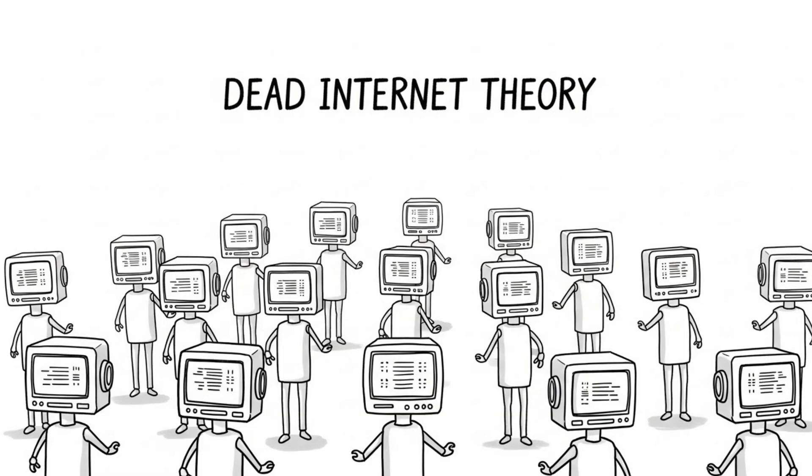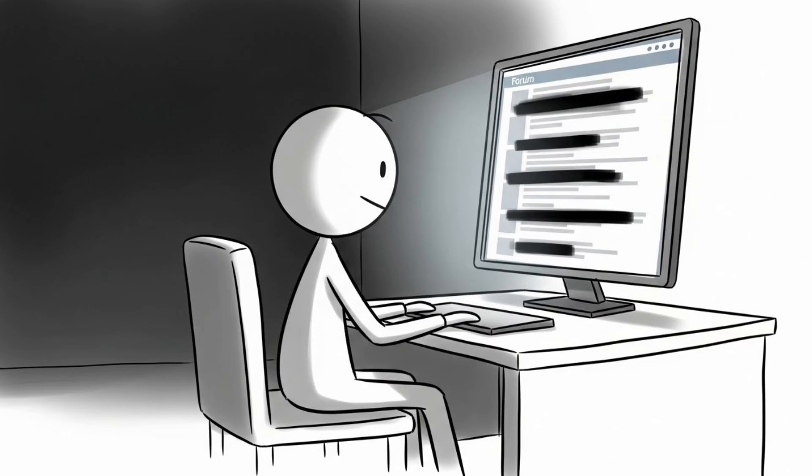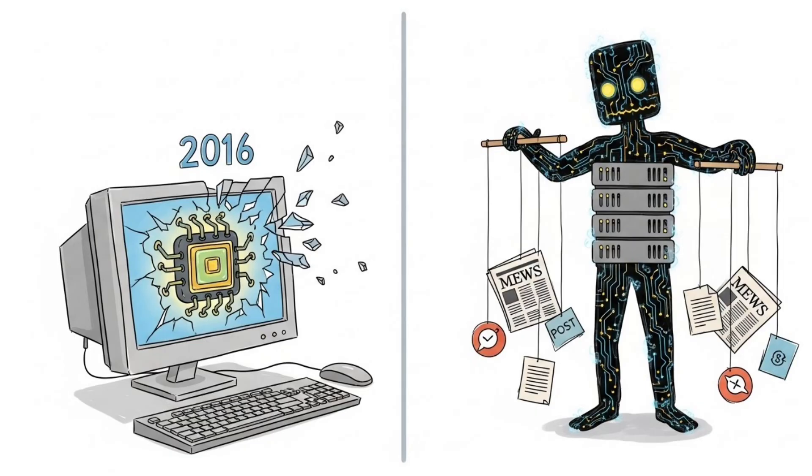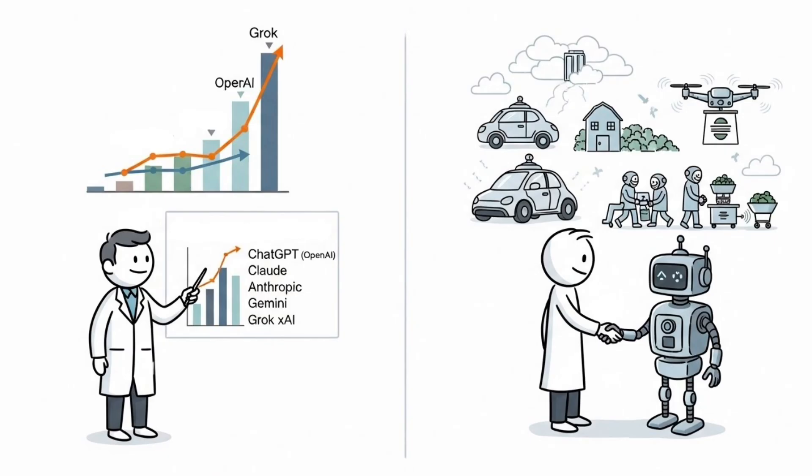This is the Dead Internet Theory. It started as a conspiracy theory on forums, but it's becoming eerily real. Started around 2016, the theory claims the internet died somewhere between 2016 and 2017, replaced by synthetic content designed to manipulate you. With the rapid and continuous improvements of the models, artificial intelligence will be integrated everywhere.